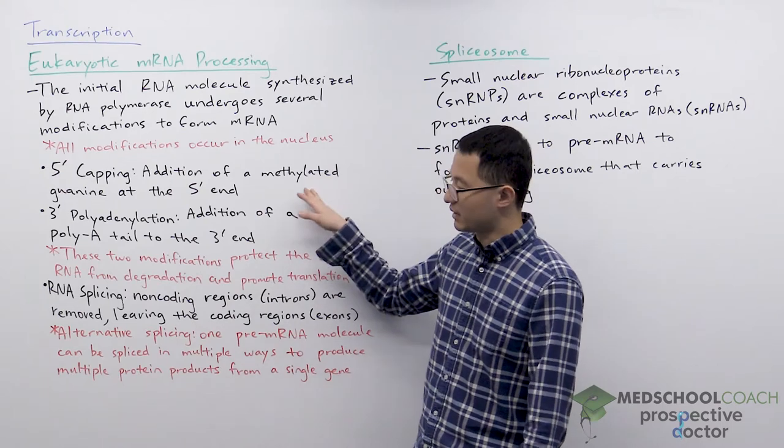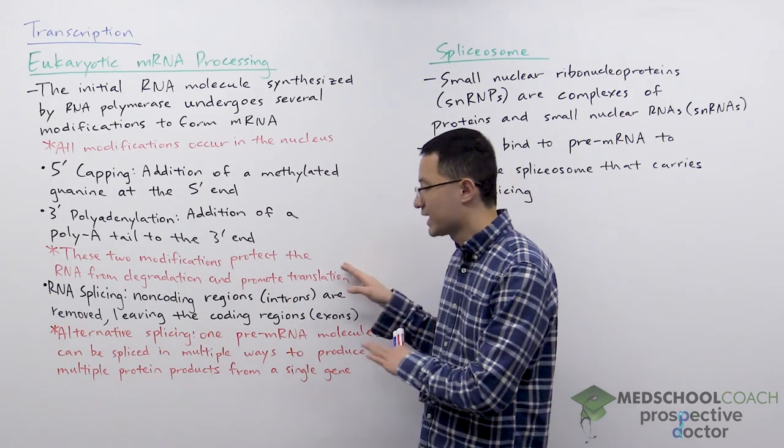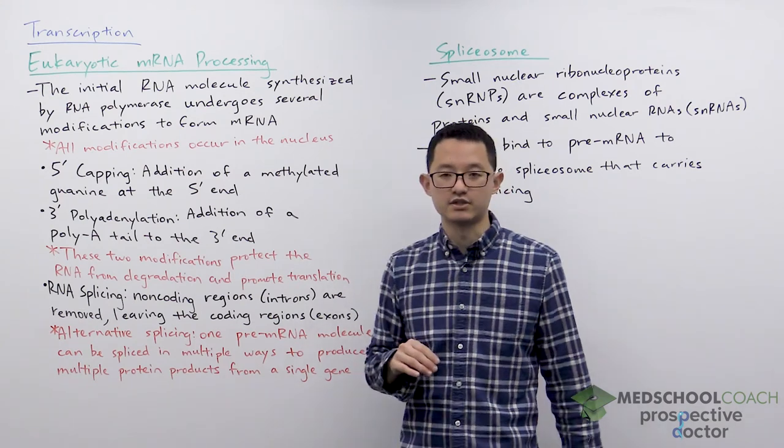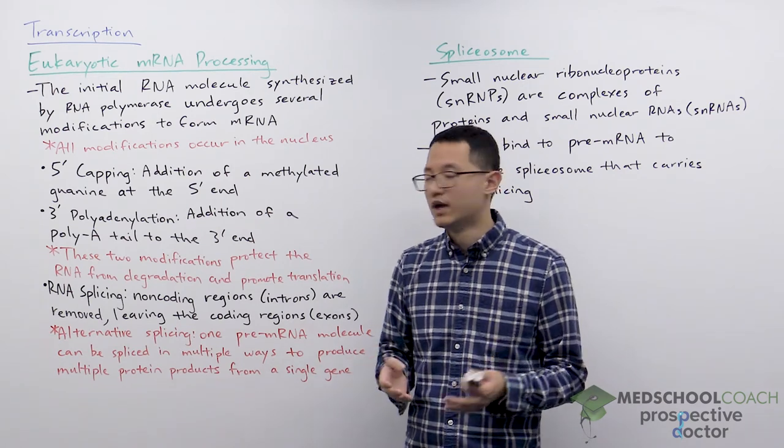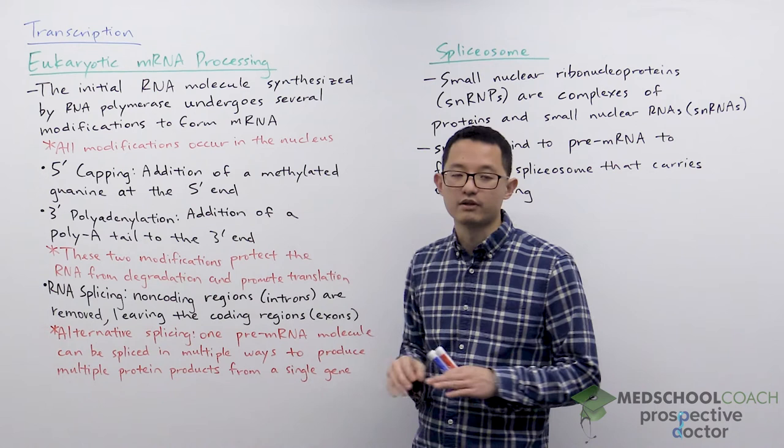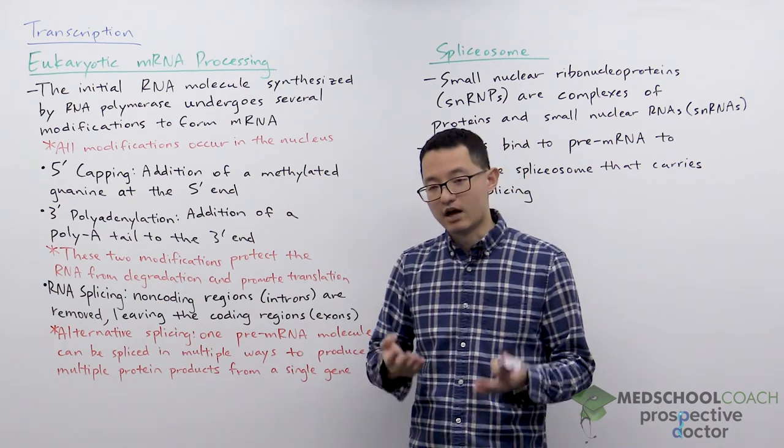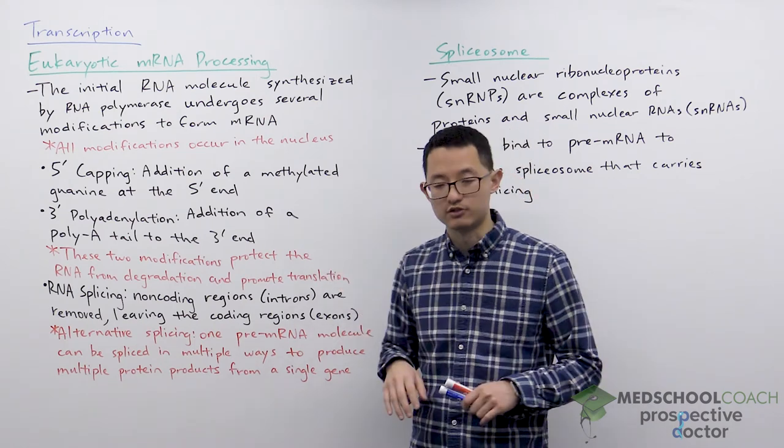The purpose of the 5' cap and the 3' poly-A tail are to protect the RNA from degradation as well as to promote translation. Remember RNA is not a very stable molecule, so without the 5' cap or the poly-A tail it would degrade easily and quickly, and that's not what we want since we do want the mRNA to be translated into proteins.